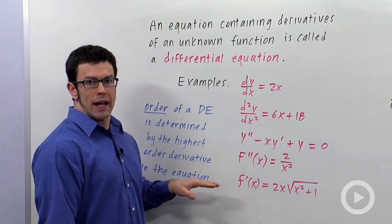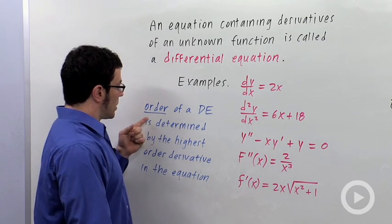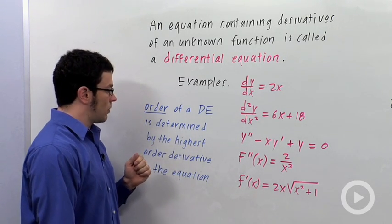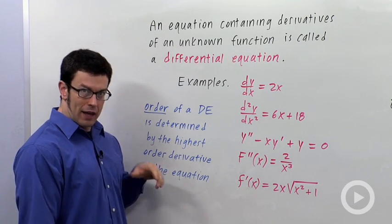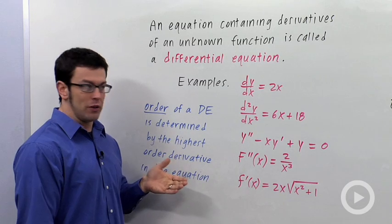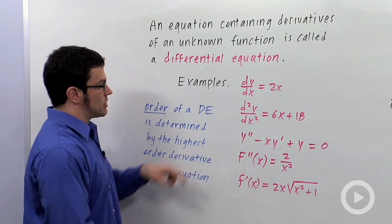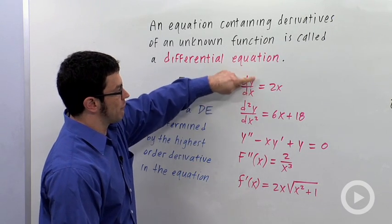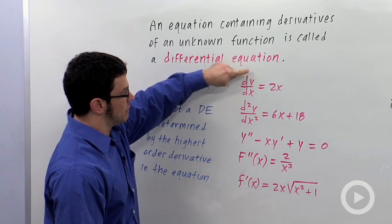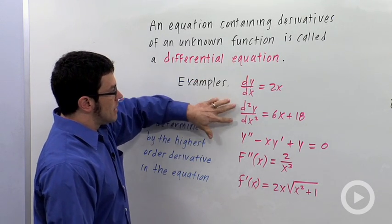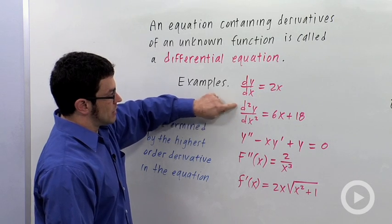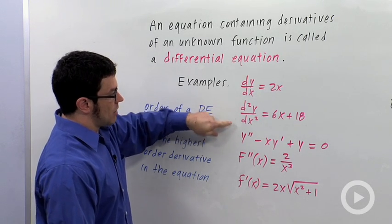Differential equations are classified according to order. The order of a differential equation is determined by the highest order derivative in the equation. So this would be a first order because you have a first order derivative here. This is a second order differential equation because you have a second order.